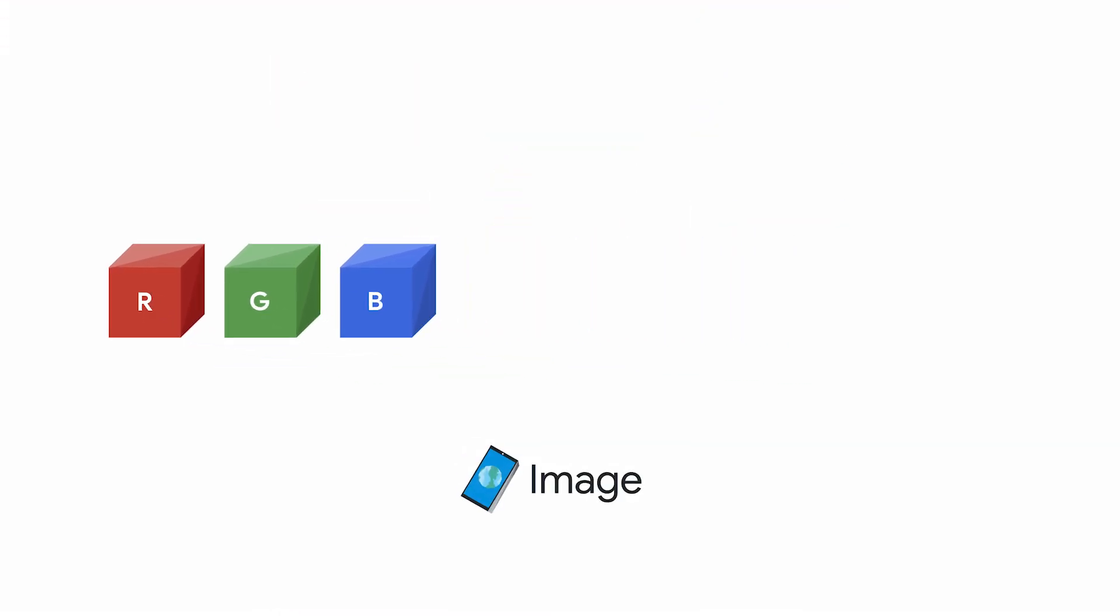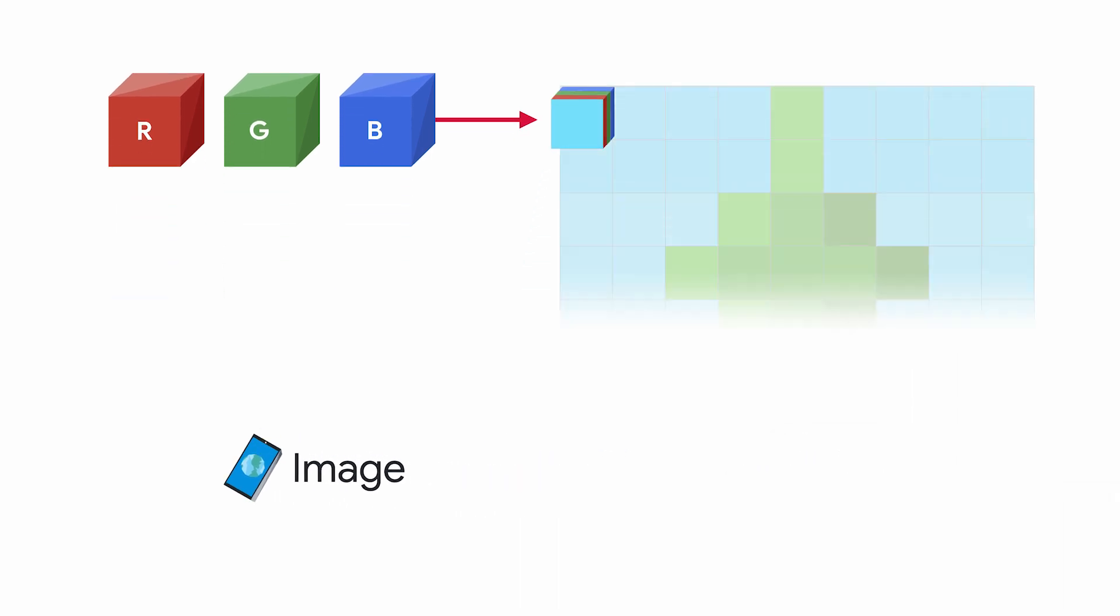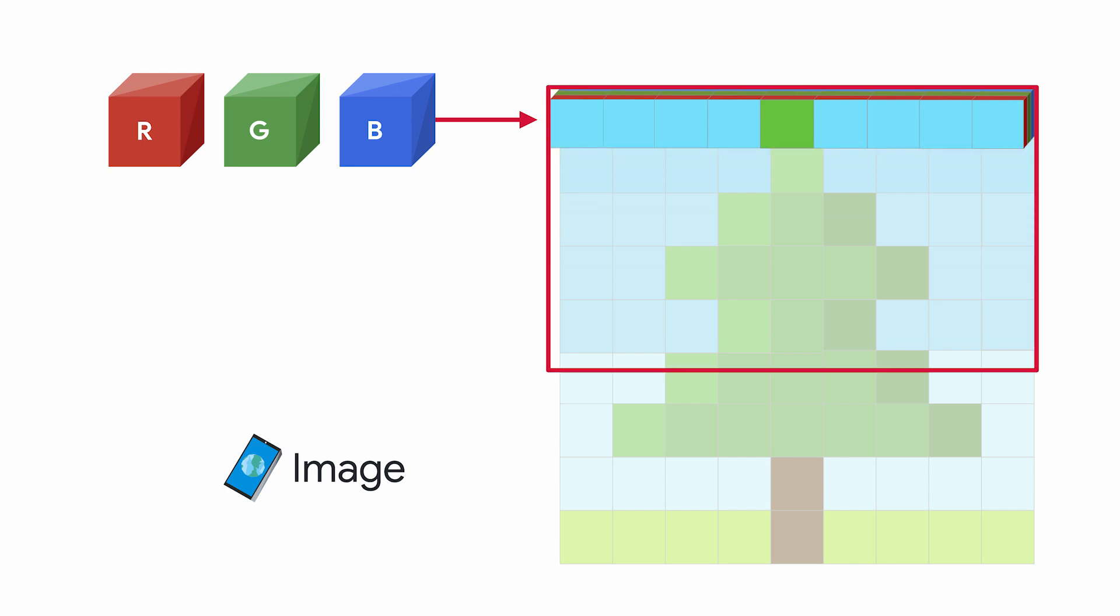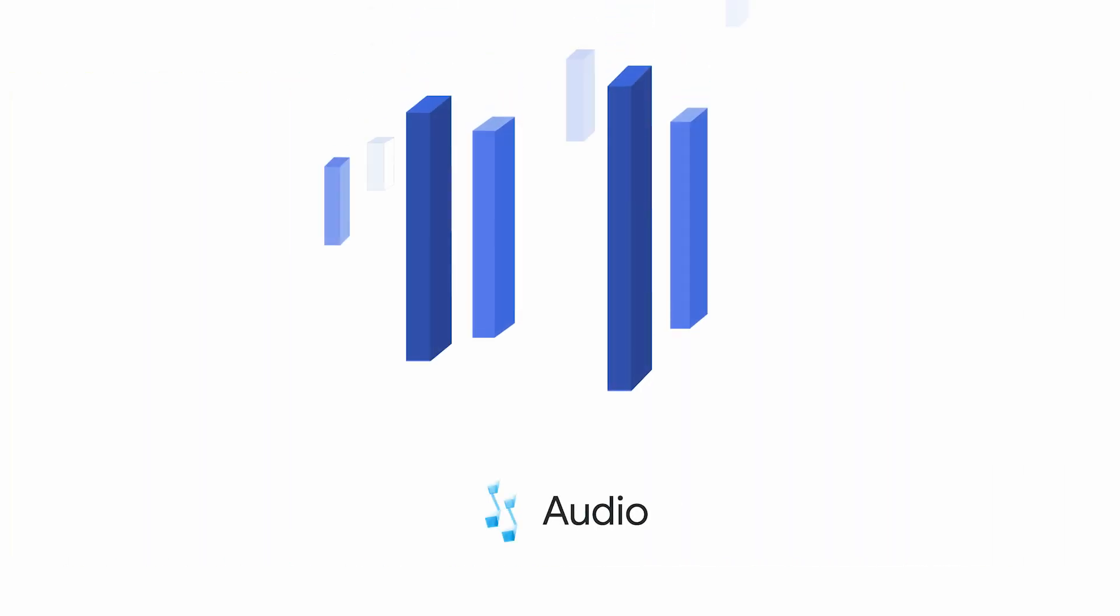More specifically, images are a collection of red, green, and blue, or RGB values across a 2D space. Audio has a wave amplitude across time. Video also has RGB values, but across space and time.